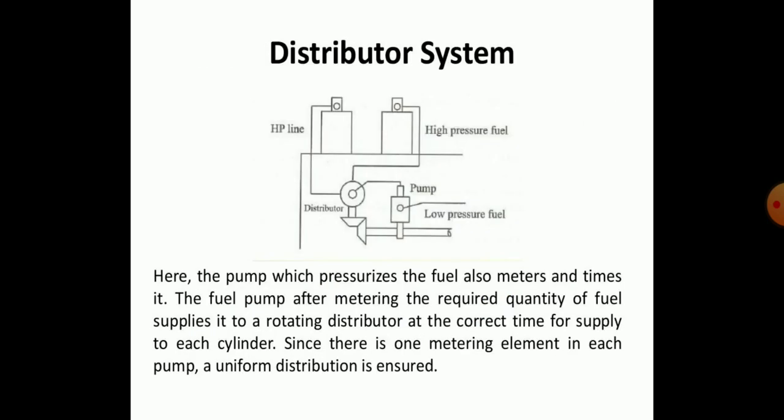In the distributor system, the pump both pressurizes and meters the fuel. After metering the required quantity, the fuel pump distributes it in sequence to each cylinder via a rotating distributor. Since there is only one metering element per pump, uniform distribution is ensured.